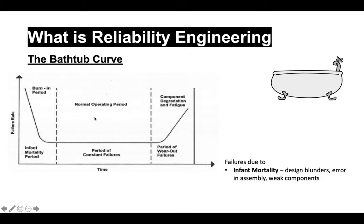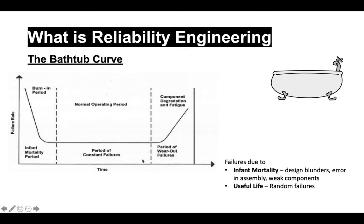Next comes the normal operating period, or useful life of the product, where the failure rate remains constant with respect to time and the product experiences failures mainly due to random events. This is the phase where the product is most in the hands of the customer, and efforts are made to increase useful life by employing better design, redundant systems, or preventive and predictive maintenance techniques so that components are replaced before they enter the wear out phase.